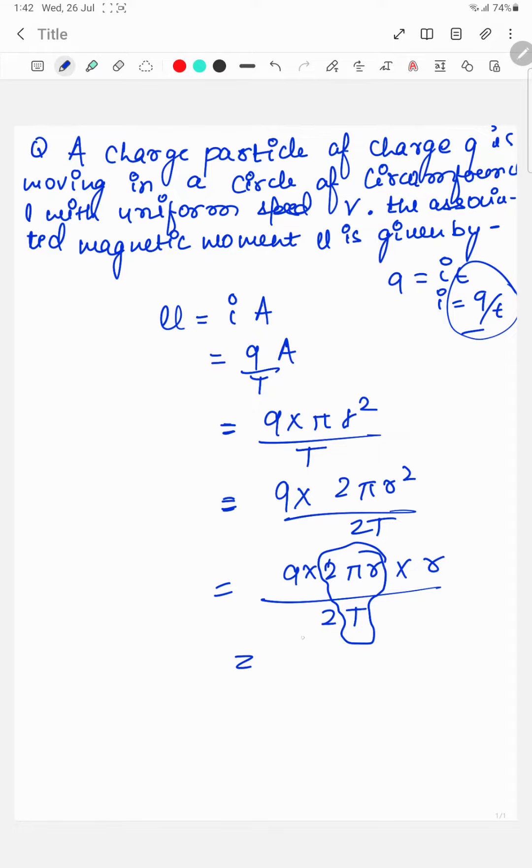distance upon time. Q into V into r upon 2T. Now at the place of r we can write 2pi r equals L, so r equals L upon 2pi. Q V L upon 4pi is your answer.